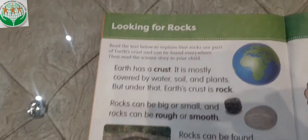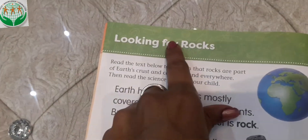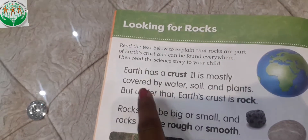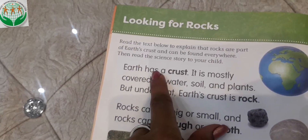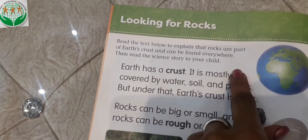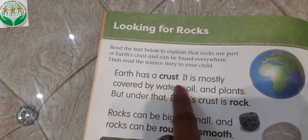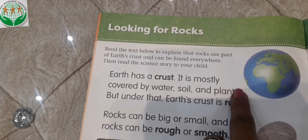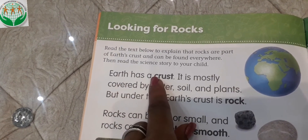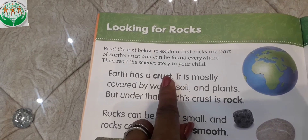Our chapter name is Looking for Rocks. Earth has a crust. It is mostly covered by water, soil, and plants. Earth has many layers.